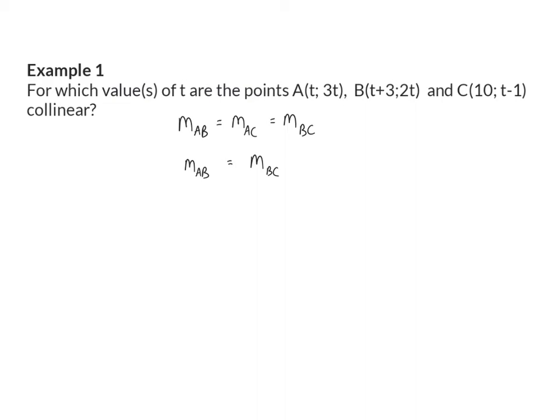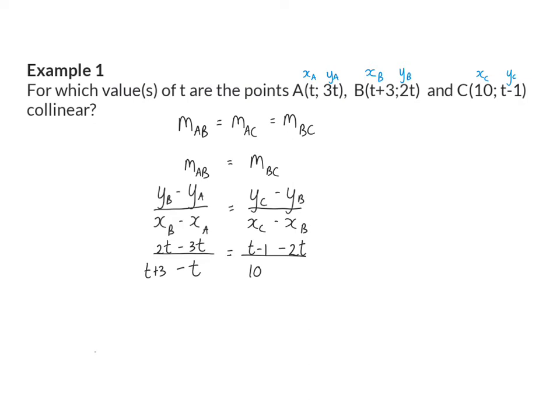And now I can substitute into our gradient equation. So on the left, I'm going to use the y of B minus the y of A divided by the x of B minus the x of A. And on the right, I will have the y of C minus the y of B divided by the x of C minus the x of B. It helps if I now go and name all those different coordinates so that I can easily substitute. So the y of B is 2t minus the y of A, 3t, divided by the x of B, which is t plus 3, minus the x of A, which is t. On the right, the y of C is t minus 1, minus the y of B, 2t. And I'm dividing by the x of C, 10, and now it's very important to subtract in a bracket your x of B or the t plus 3 to ensure that you don't make sign mistakes.